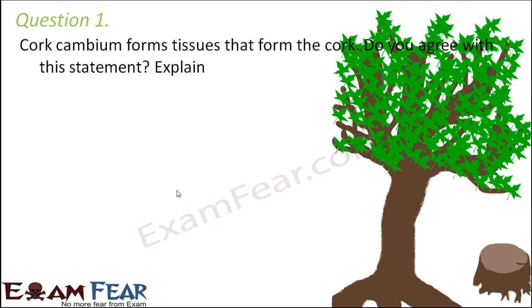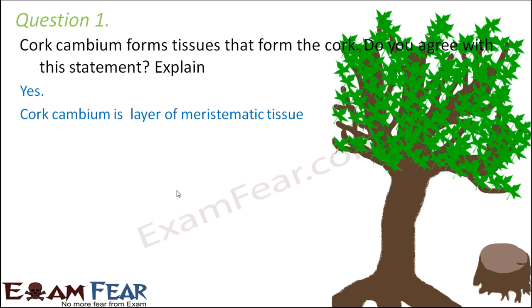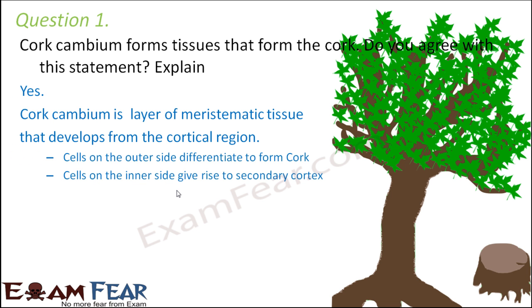The first question: cork cambium forms tissues that form the cork — do you agree with this statement? Cork cambium is the layer of meristematic tissue which develops around the cortex region. It forms new cells on the outer side and inner side. The outer side cells form cork, and the inner side cells form secondary cortex. So yes, we agree with this statement.